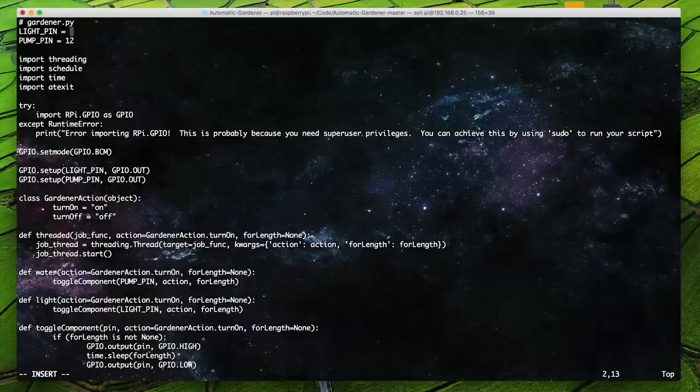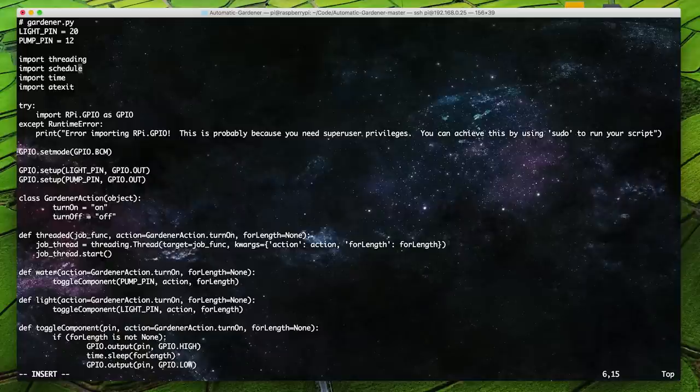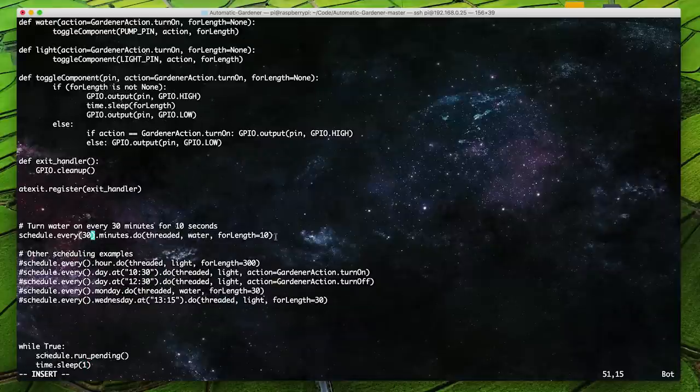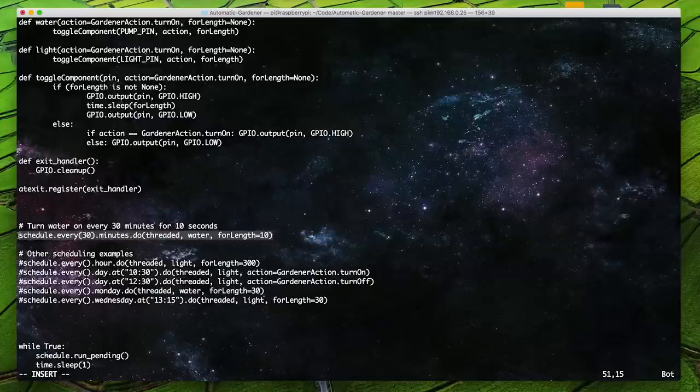At the top you'll notice two variables, one for the light pin and the other for the pump pin. My light pin was pin 20 and my pump pin was pin 12. You can change these if your signal wires are wired to different pins on your Raspberry Pi. The program has a simple scheduler which can turn the components on and off at different intervals.